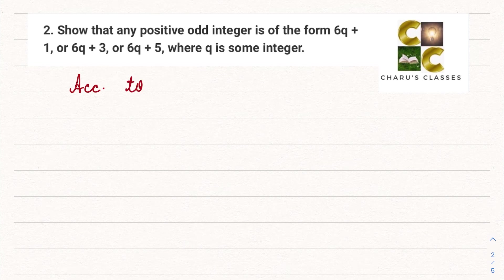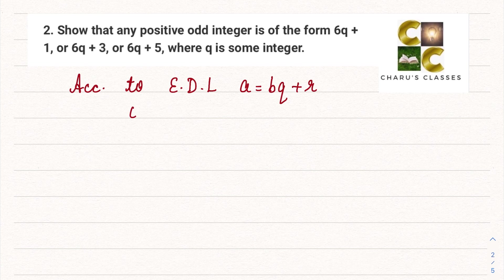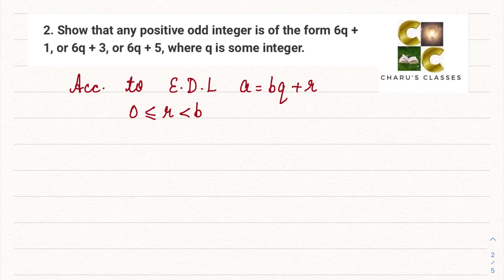According to Euclid's division lemma, if a and b are two positive numbers, then a can be written as bq + r, where r is always greater than or equal to 0 but less than b. So we are going to use this to prove this.